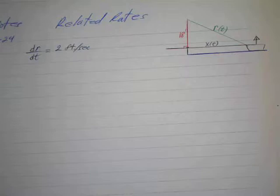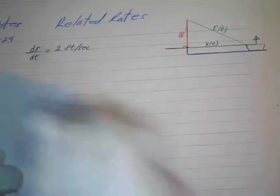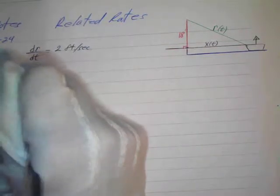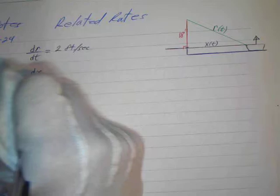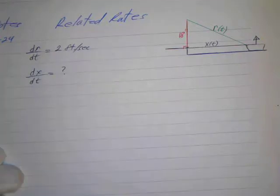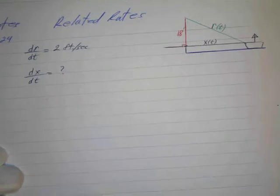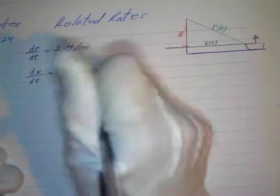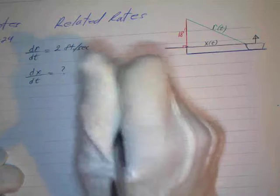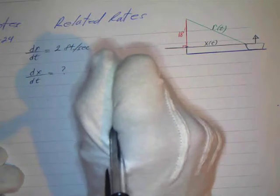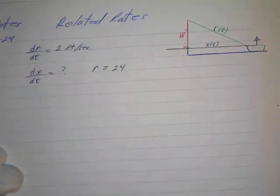And we want to find out how fast the boat is being pulled towards the dock, so that's going to be dx/dt. That's what we're looking for, dx/dt. What does that equal when 24 feet of rope are out, so when r equals 24? Let's see what we've got here now.